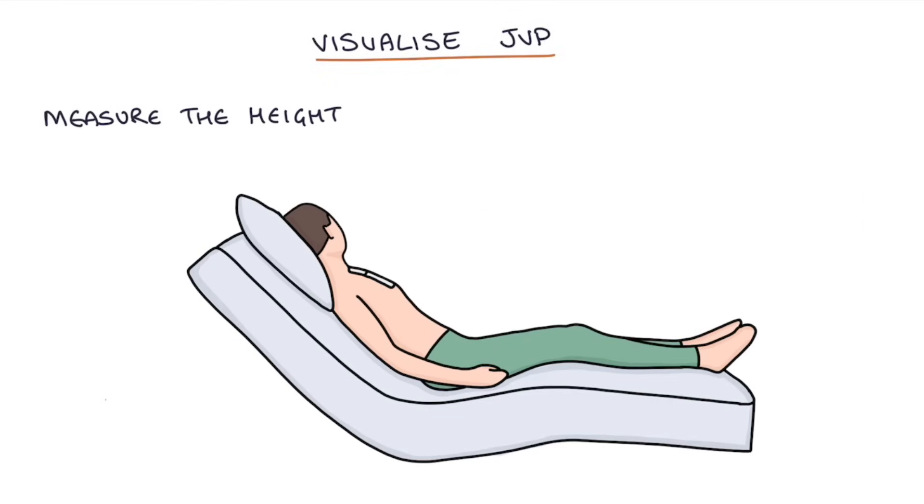To measure the height of the JVP, find the angle of the sternum or the sternal angle and measure vertically from this point. Then assess where the JVP is. The vertical height from the sternal angle to the level of the JVP is the height of the JVP. A normal JVP height is less than three centimeters, so a height above three centimeters would be considered a raised JVP.